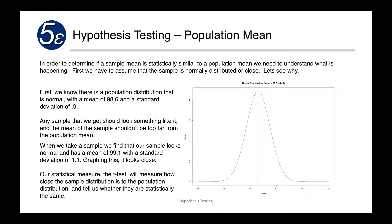When we take a sample and we find that our sample looks normal, has a mean of 99.1 with a standard deviation of 1.1, graphing it will look close. We have a statistical measure, the t-test, which will measure how close the sample distribution is to the population distribution and tell us whether they are statistically the same — whether the sample matches the population.